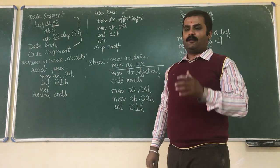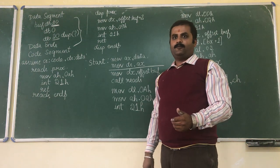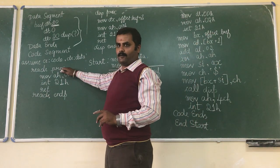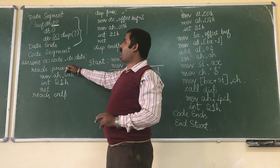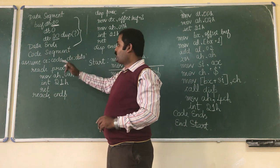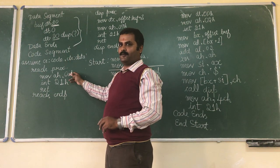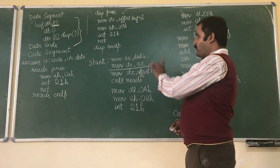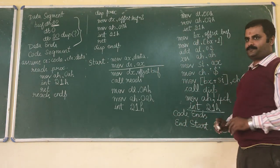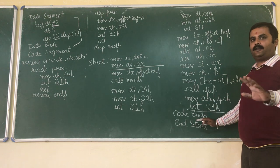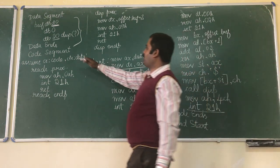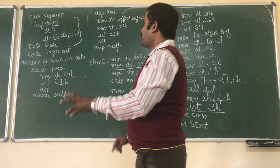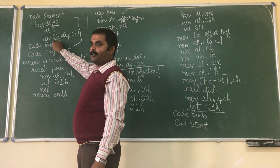You might ask where we can put the procedure block. A procedure program can be written anywhere, but it should not be written after the data segment and before ASSUME. It should always be written after ASSUME. All procedure related programs should always be written after ASSUME, or you can also write all procedure programs after INT 21H. Or after ASSUME before START — those are the only two ways where you can write procedure programs.